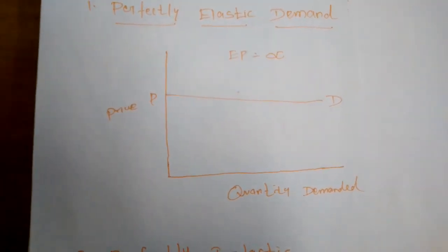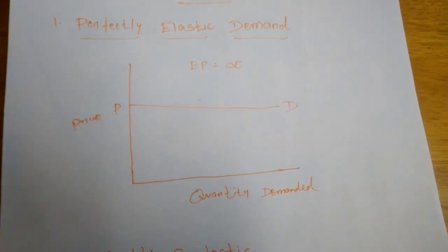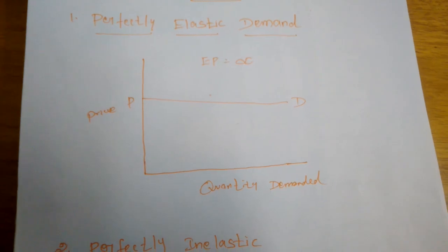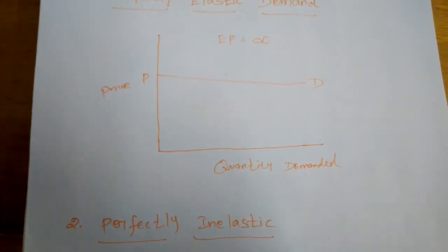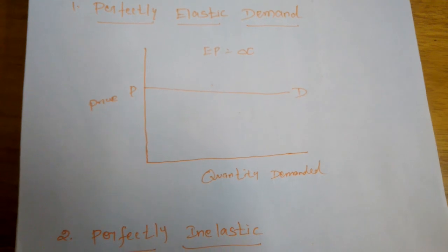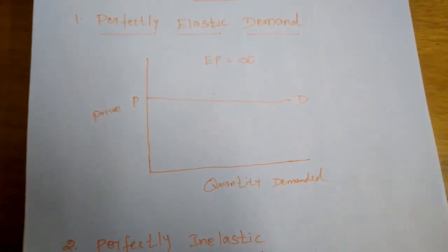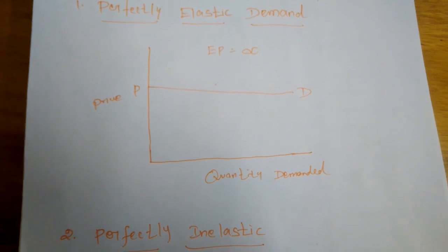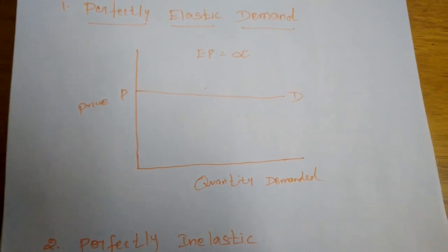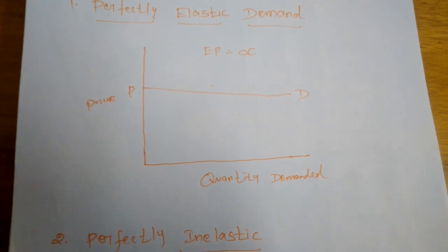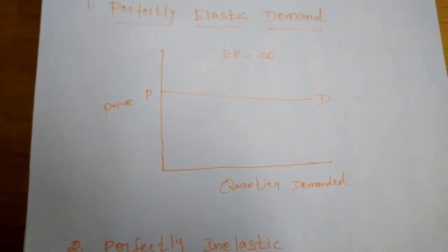The elasticity of demand is a technical term used by economists to describe the degree of responsiveness of quantity demanded for a commodity to a change in its price. Think of 'elasticity' as flexibility — in what rate will the quantity of commodity change? There are four types of elasticity of demand: price elasticity, income elasticity, cross elasticity, and advertising elasticity of demand.